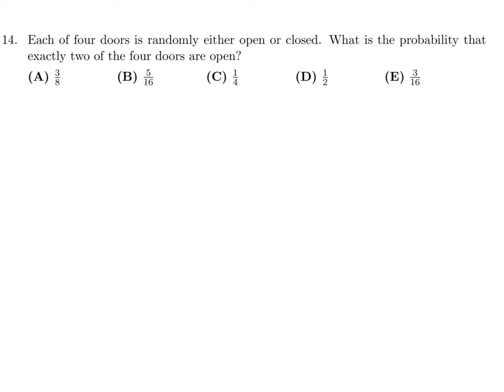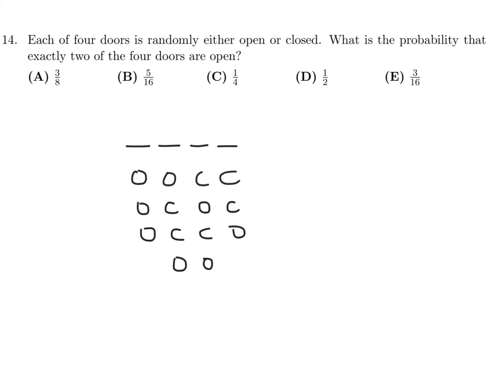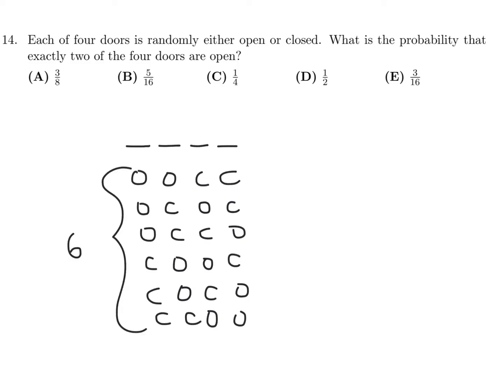Each of the four doors is randomly opened or closed. What is the probability that exactly two of the four doors are open? There are a few ways: open-open-closed-closed, open-closed-open-closed, open-closed-closed-open, closed-open-open-closed, closed-open-closed-open, closed-closed-open-open — six ways total.